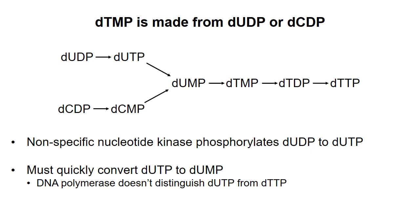In the second pathway to make thymine deoxynucleotides, dCDP is dephosphorylated to dCMP and then converted to dUMP.